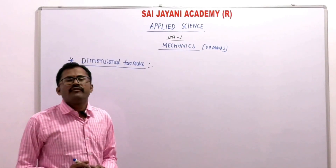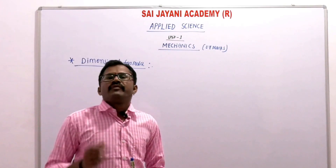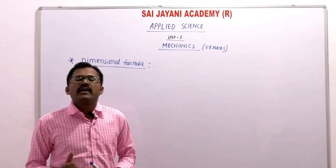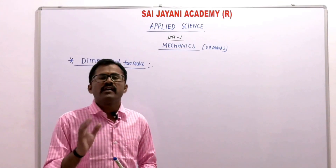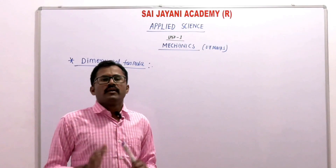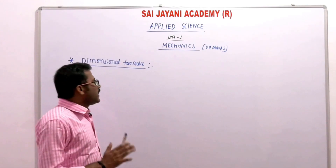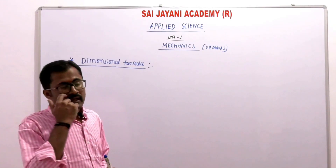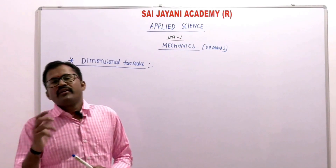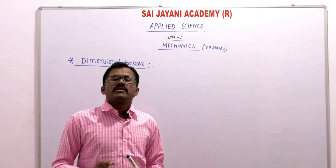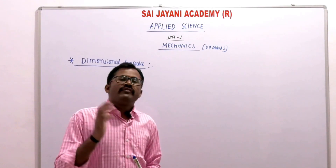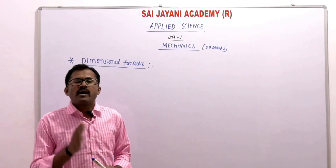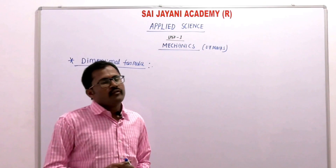The next concept is dimensional formula. In the 2015 scheme this topic was removed, but in the previous scheme it was a very important concept with one question always asked. The dimensional formula is still a very important concept. Any physical quantity can be expressed in terms of three fundamental quantities — mass, length, and time — and this expression is called the dimensional formula.